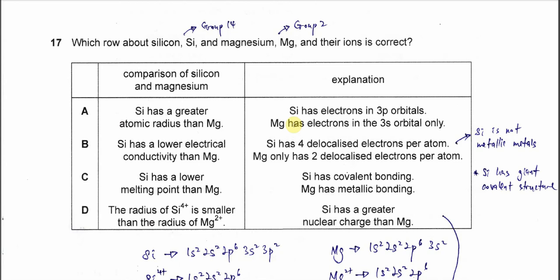Question 17. Which row about silicon and magnesium and their ions is correct?